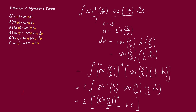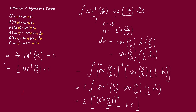Now we simplify. We distribute the 2 to get 2 over 4, giving sine raised to 4 of x/2. Since 2c is just a constant, we write it as c. Simplifying further, we have one-half sine raised to 4 of x/2, plus C. This is our final answer.